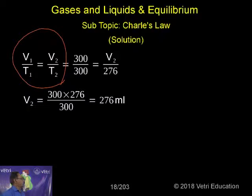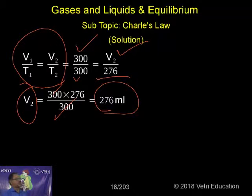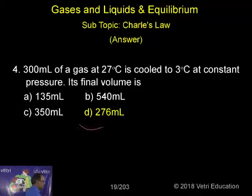I can simply substitute. V1 I know is 300, T1 I know is 300, and V2 I have to calculate, T2 already given. So 3, it is 273 plus 3 is 276. So on cross multiplication, V2 equals 300 into 273 by 300. The answer is 276 ml, which is the correct answer.